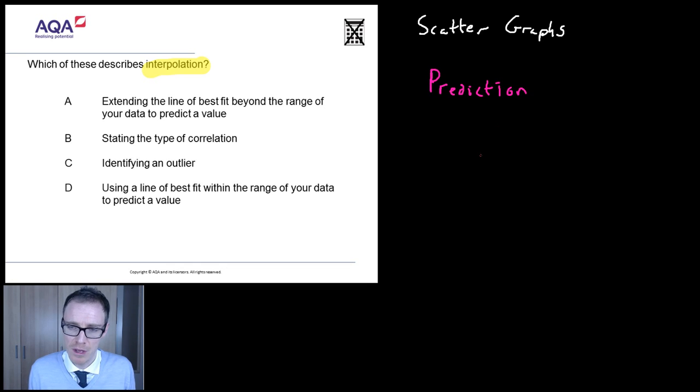Interpolation is the proper name that you give whenever you've got a scatter graph, and you've drawn a line of best fit. So, let me treat myself to a bit of yellow here. Let's get a bit colorful. I mean, that's a bad line of best fit, but you get the idea.